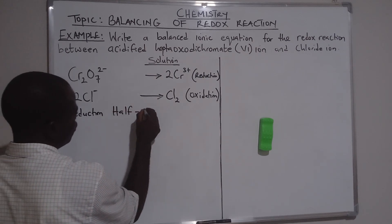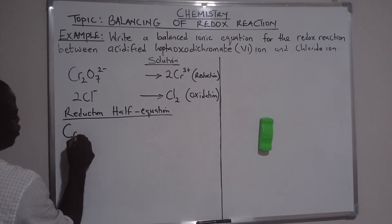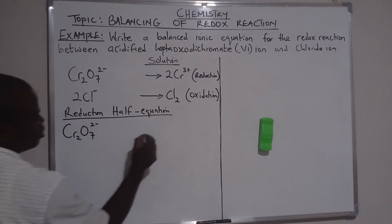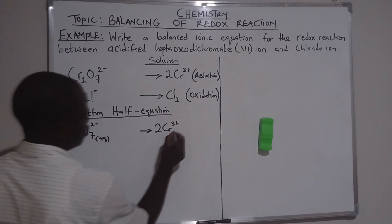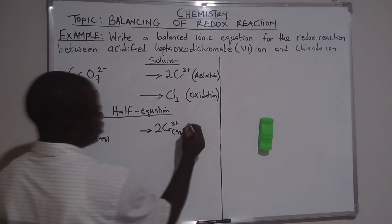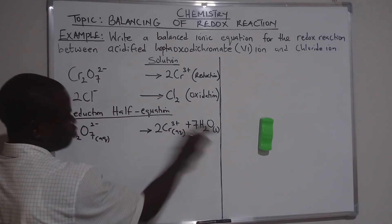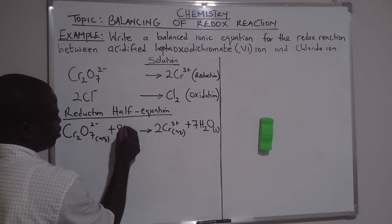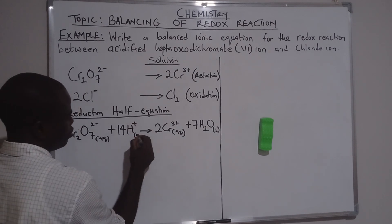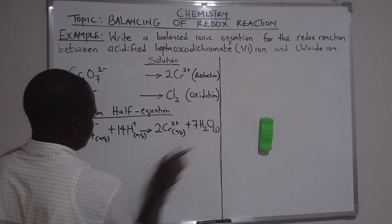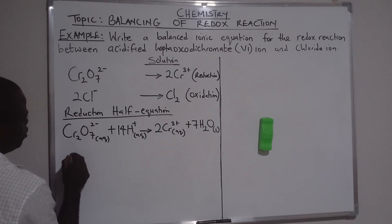Under the reduction half-equation, we have Cr₂O₇²⁻ on one side and 2Cr³⁺ on the other. Since we have seven oxygen atoms, we add seven molecules of water (liquid). Then to balance the hydrogen, seven times two gives 14, so we add 14 H⁺ ions (aqueous) to the left side.